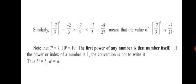You just have to multiply the base as many times as the index is shown. Note that 7 raised to the power of 1 equals 7 itself — any number raised to the power of 1 is the number itself. 10 raised to the power of 1 is equal to 10. If the power or index of a number is 1, the convention is not to write it. Thus, 5 raised to 1 equals 5, and a raised to 1 equals a.